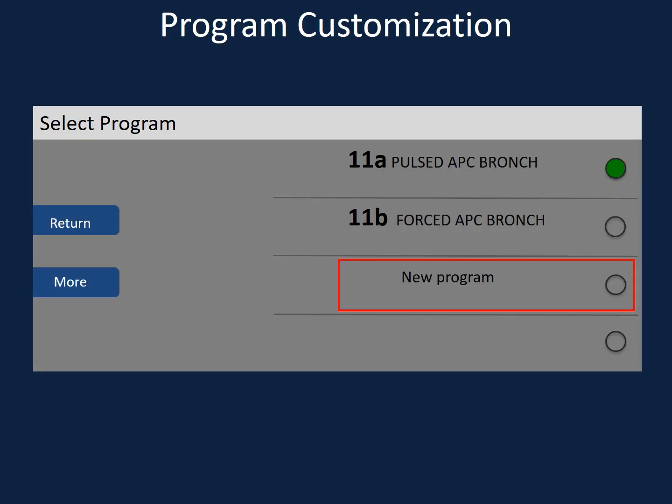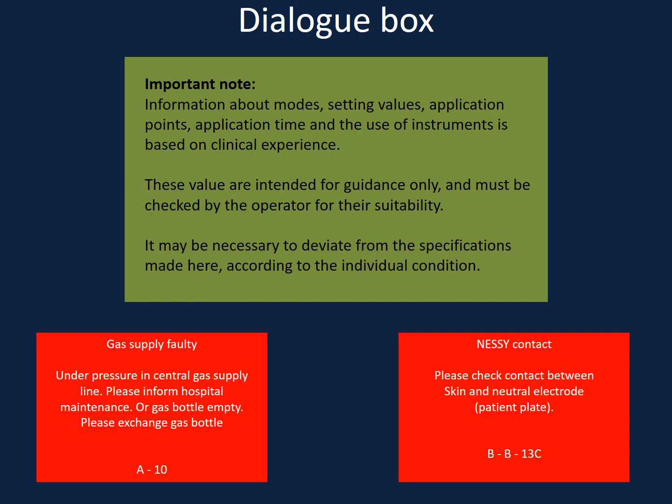The ERBY unit also offers the possibility to customize and name programs based on physician preference and the area being treated. During use, the screen may display different messages. A green dialog box conveys helpful information — for example, that the probe is being purged. A red dialog box displays critical information that impacts the completion of a function.